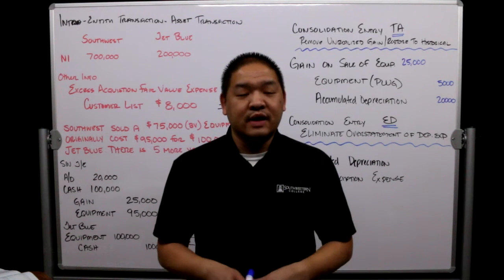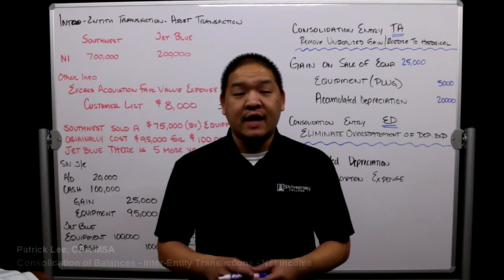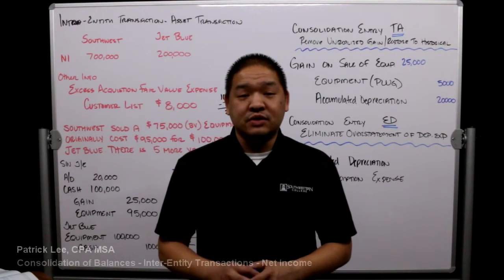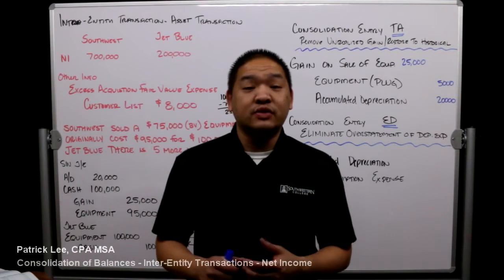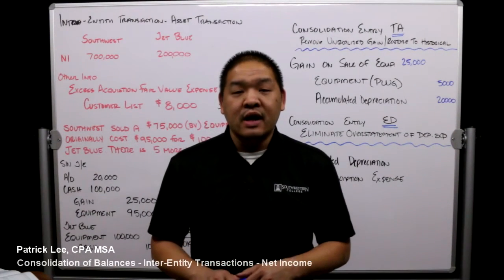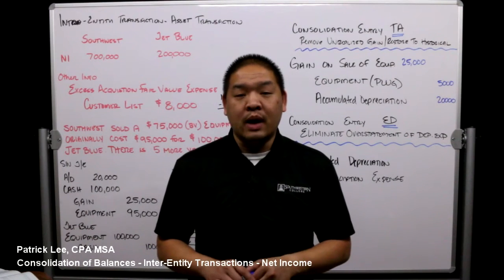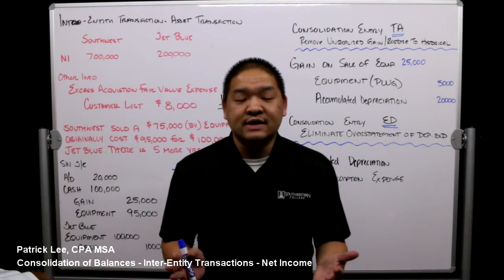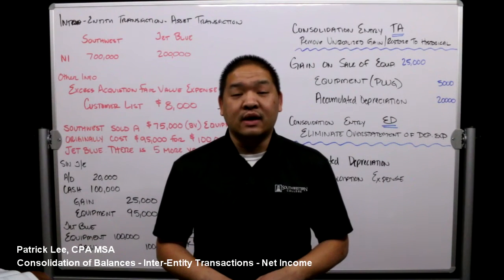In this video we're going to go over some of the topics you need to understand in order to complete your homework, especially one of your problems. In particular, we're talking about a situation in which a parent or a subsidiary sells a piece of equipment to the other, and at the end of the day we need to eliminate those transactions in order to figure out what net income is.